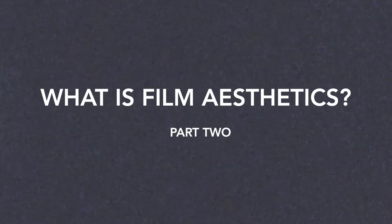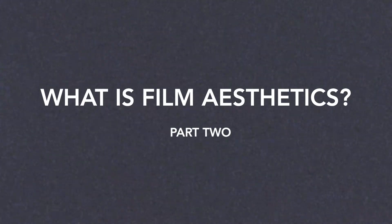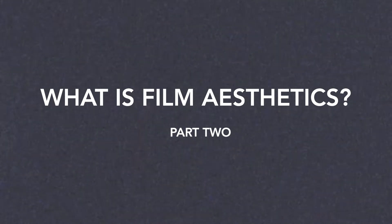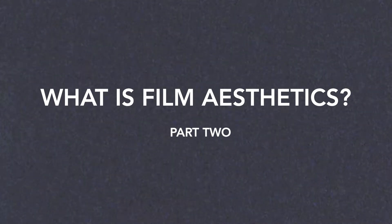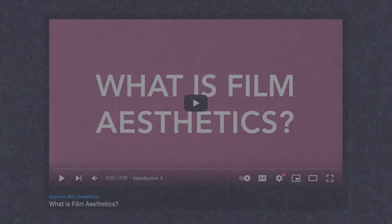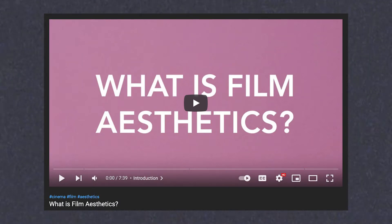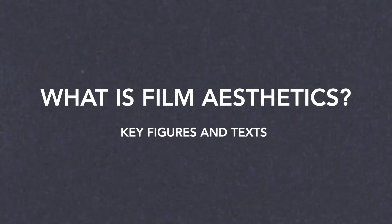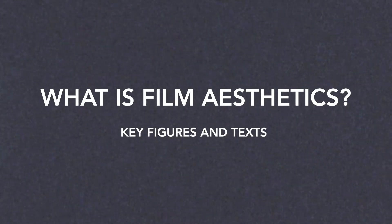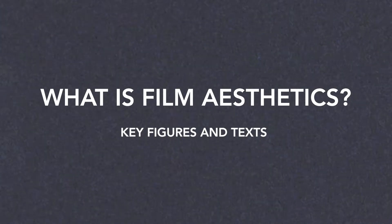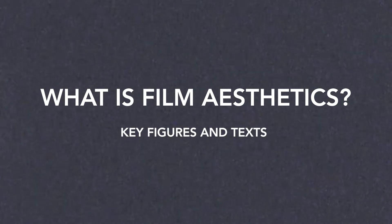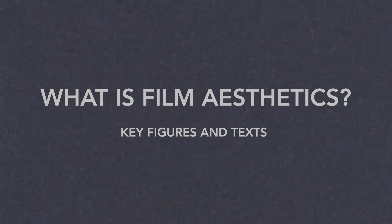This video is part two of a two-part series that seeks to introduce what the academic study of film aesthetics entails. Part one sought to clarify what film aesthetics is and can be found linked in the description box below and at the end of this video, whereas in this video I've compiled a list of some of the key figures and texts in the field of film aesthetics, each accompanied with a brief overview for those wanting to research this area of film studies further.